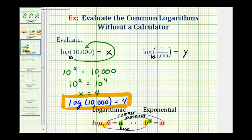We'll write this as an exponential equation. The base is 10, the exponent is y, and it equals 1/1,000. So 10^y = 1/1,000. Notice that 1,000 has three zeros, so 1,000 equals 10 to the third. Therefore, 10^y = 1/10^3.